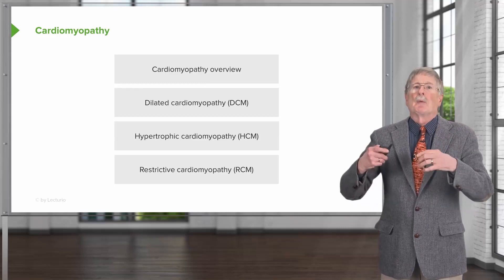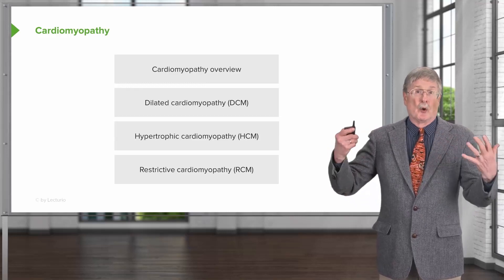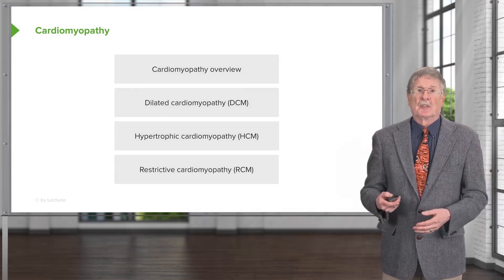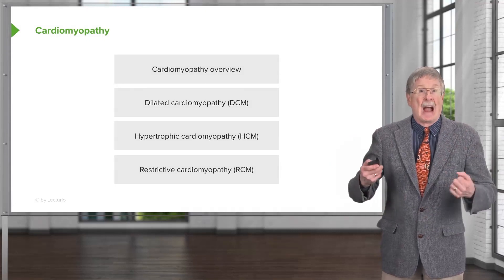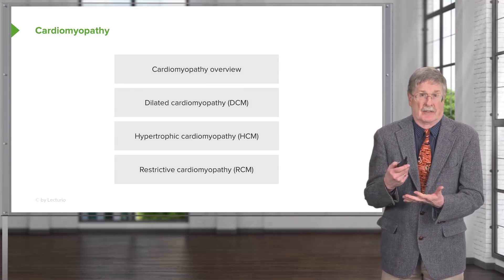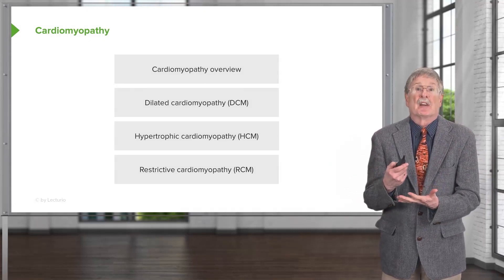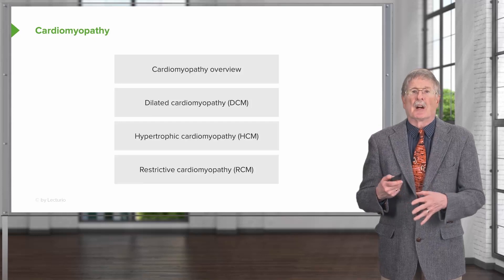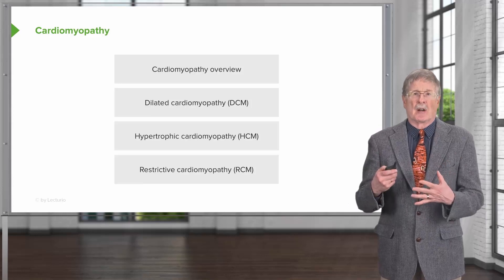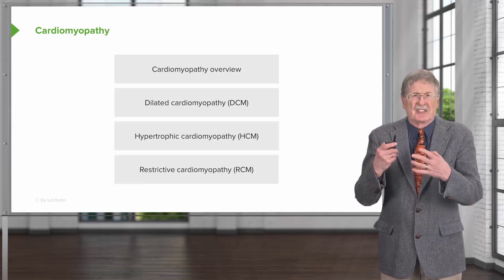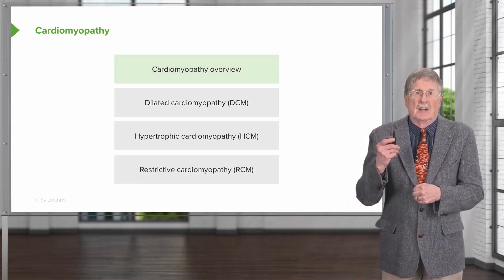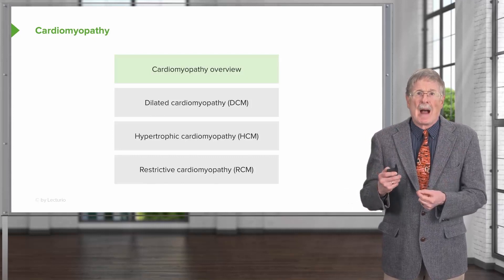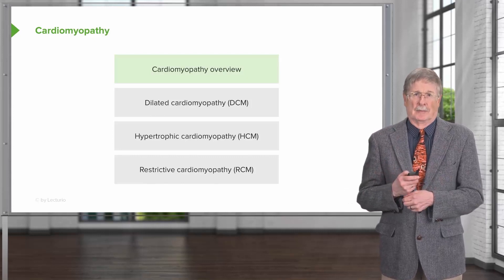We will talk about a dilated or globoid or floppy heart, a very hyperdynamic heart — that's hypertrophic cardiomyopathy — and then restrictive cardiomyopathy, which is a stiff heart. So let's start with a cardiomyopathy overview.